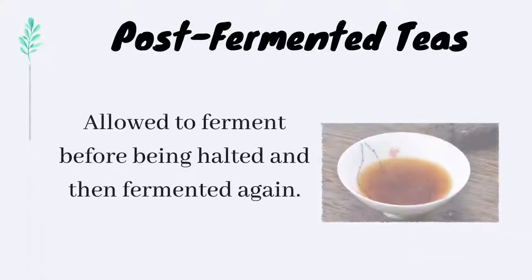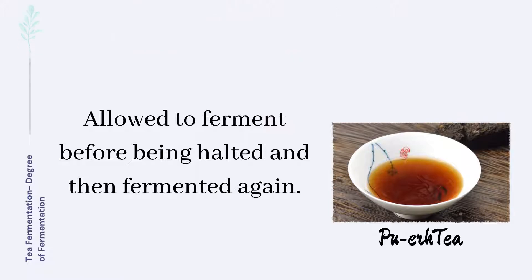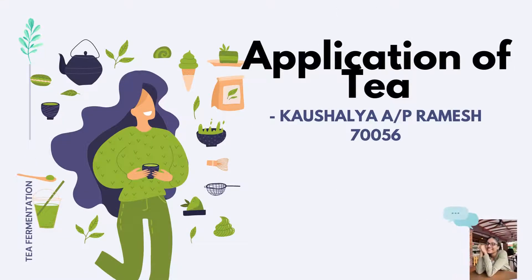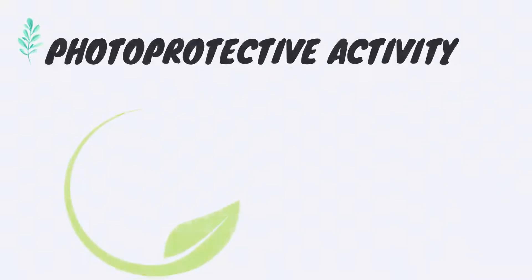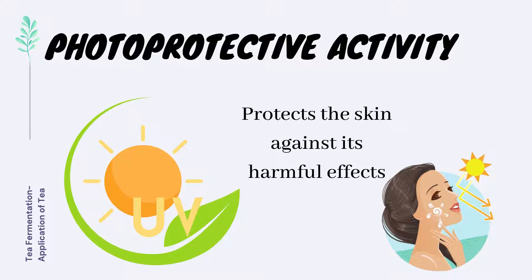Lastly, post fermented tea refers to tea that has been allowed to ferment, then halted, and then fermented again. An example of a tea that undergoes a post fermented process is puerh tea. The first application of tea is that it helps with photoprotective activity, where tea leaf extract absorbs ultraviolet radiation and thereby protects the skin against its harmful effects.